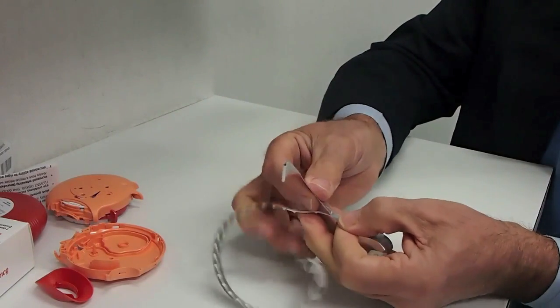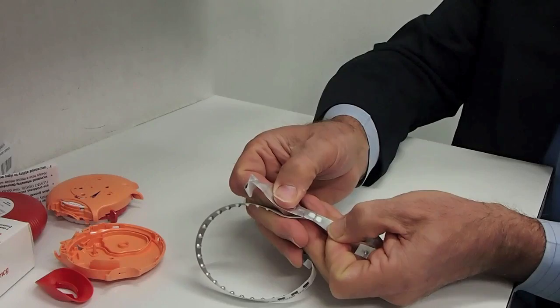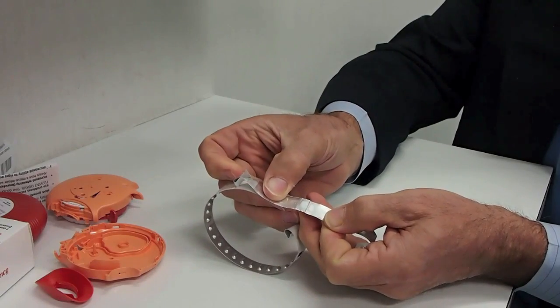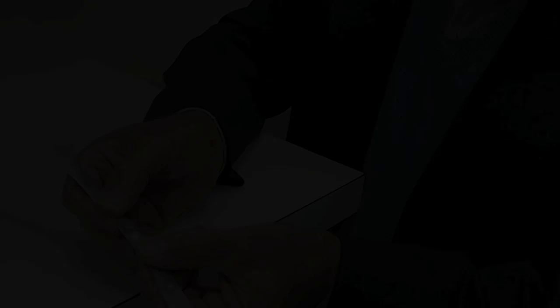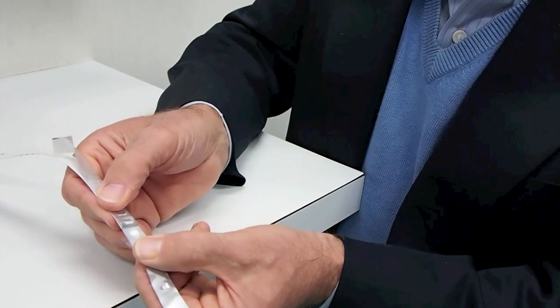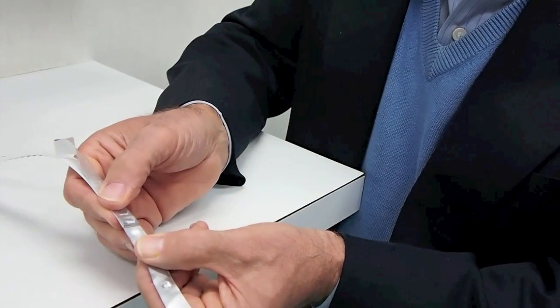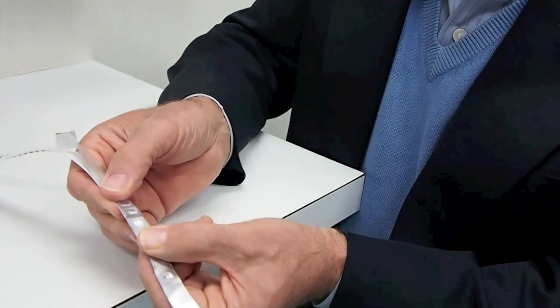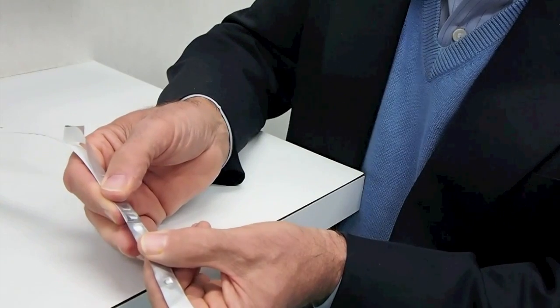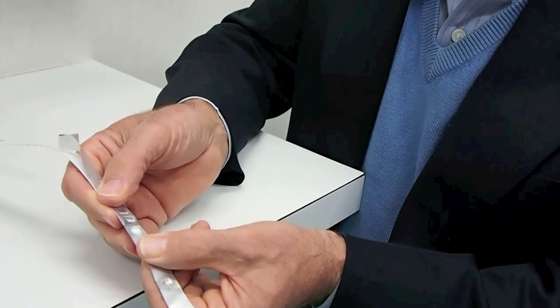Carefully peel back the strip to expose a single dose of powder. Place your thumbs on either side of the dose and then place it over the tongue and tap on the strip to drop the medicine onto the tongue.